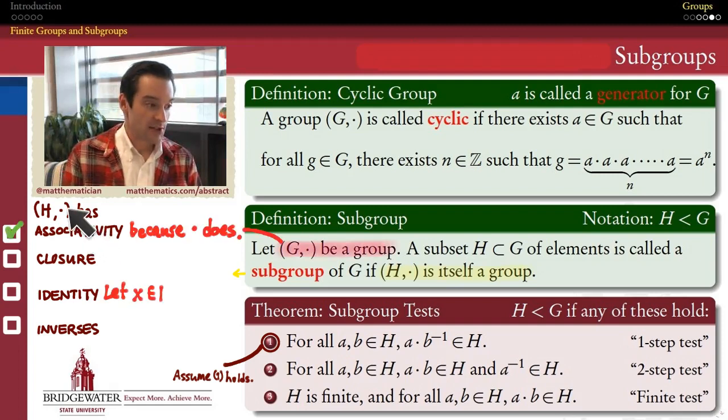Why does the associativity property hold? Well, because this operation in the group G is already associative. We know it's associative because G is a group. And if it's associative on all the elements of G, then because H is a subset of G, it's also associative on all the elements of H. So associativity is easy and quick. We don't have anything to prove because this is already an associative operation by assumption.